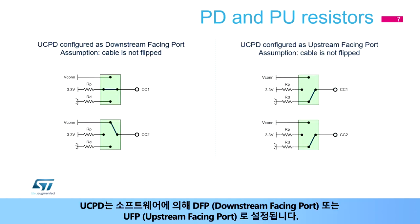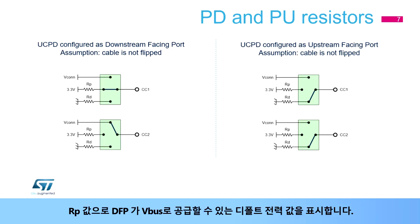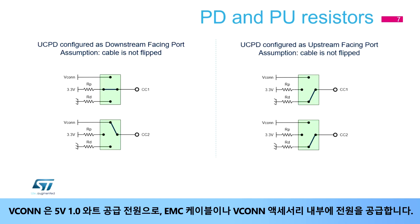The UCPD is configured by software as either a downstream-facing port or an upstream-facing port. In DFP mode, assuming no cable flip, CC1 is connected to RP, whose value indicates the default power that the DFP can source on V-Bus. CC2 is connected to V-CON, which is a 5-volt, 1.0-watt power supply used to power devices within the plug needed to implement electronically marked cables and V-CON-powered accessories.